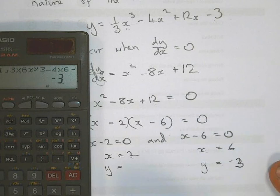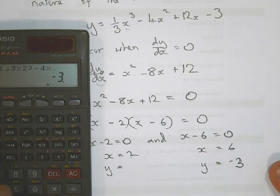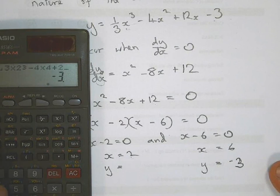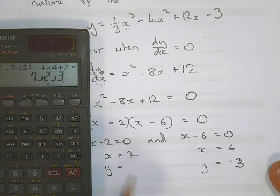Now you do the same with this one here. You put a third times 2 cubed, minus 4 times 4, which is 2 squared, plus 24, which is 12 times 2, minus 3. And that gives you 7 and 2 thirds.